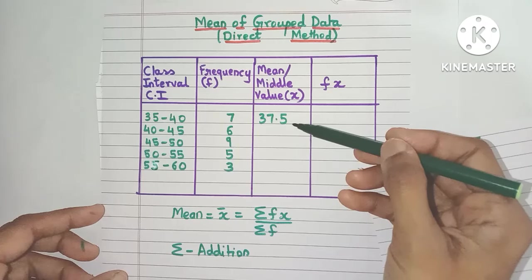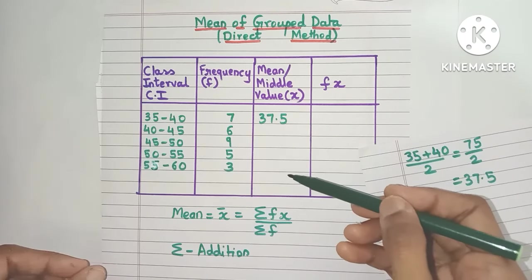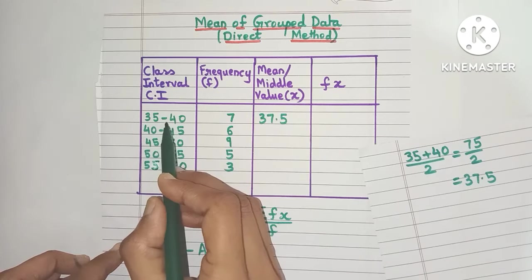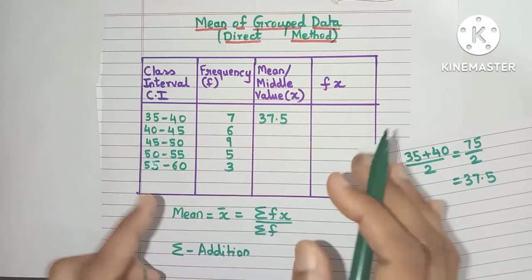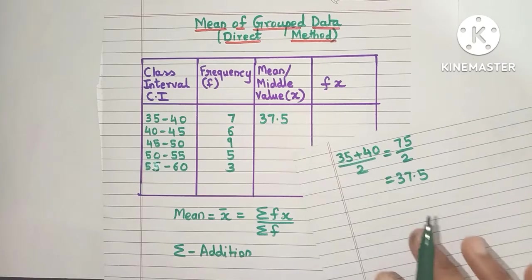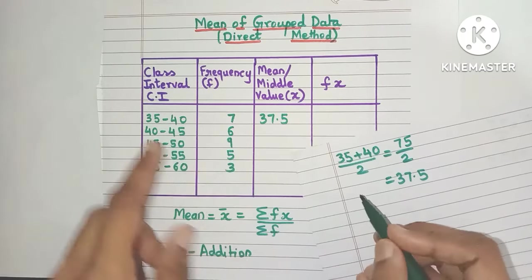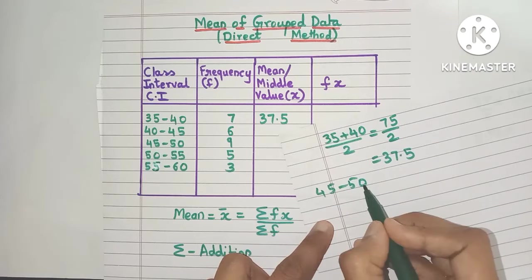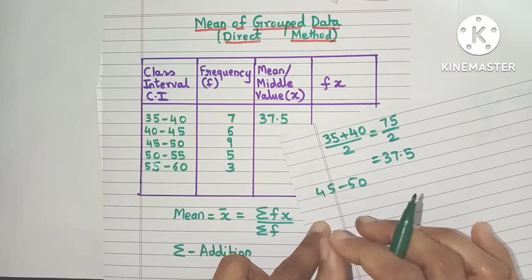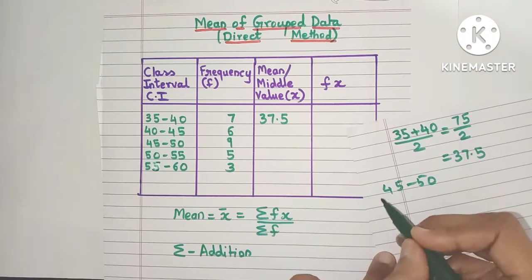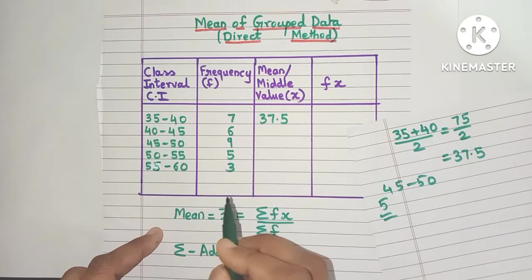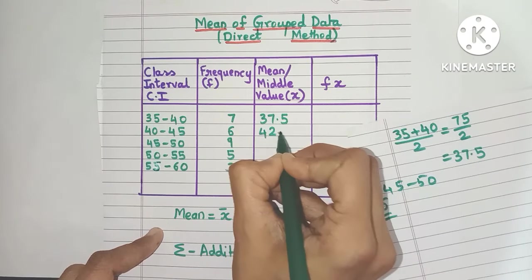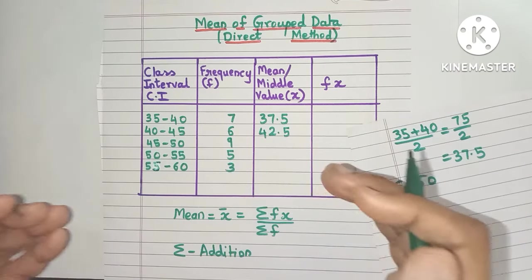You can find the x value for all class intervals this way, but usually an easier method is used. After finding the x value for the first class interval, just find out the class size. For any class interval, say 45 to 50, the class size is upper limit minus lower limit, which is 50 minus 45, that is 5. Just add this 5 to the previous x value. So 37.5 plus 5 gives you 42.5, and this will be your next x value.